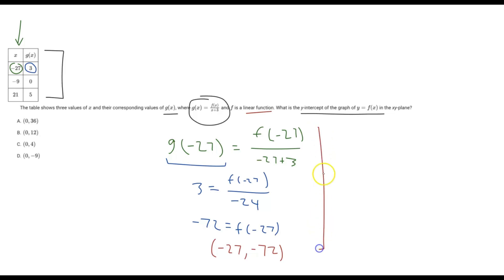So this entire process here, we just have to replicate again with any one of these points. I'm going to use negative 9, 0 here. So we know g of negative 9 is going to be 0. So I'm just going to skip the top step here and write 0 equals f of x. x here we know is negative 9. So f of negative 9 over, we have x plus 3. We know x is negative 9, so negative 9 plus 3.